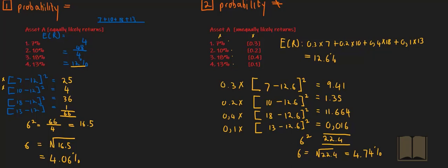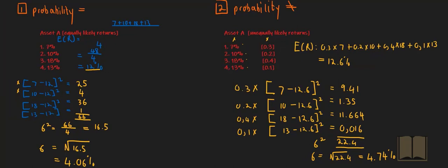At this point, it's worth noting the similarities as well as the differences in calculating standard deviation in each of these two scenarios. Both involve the calculation of the expected return. In scenario one, the expected return is just the summation of all the returns divided by the number of data points. Whereas in the second scenario, we multiplied each return by its probability of occurring and summed these all up. The second part for both scenarios is to calculate the squared deviations — each data point is deducted from the expected return and squared, in order to negate the situation where positive and negative differences cancel one another out.